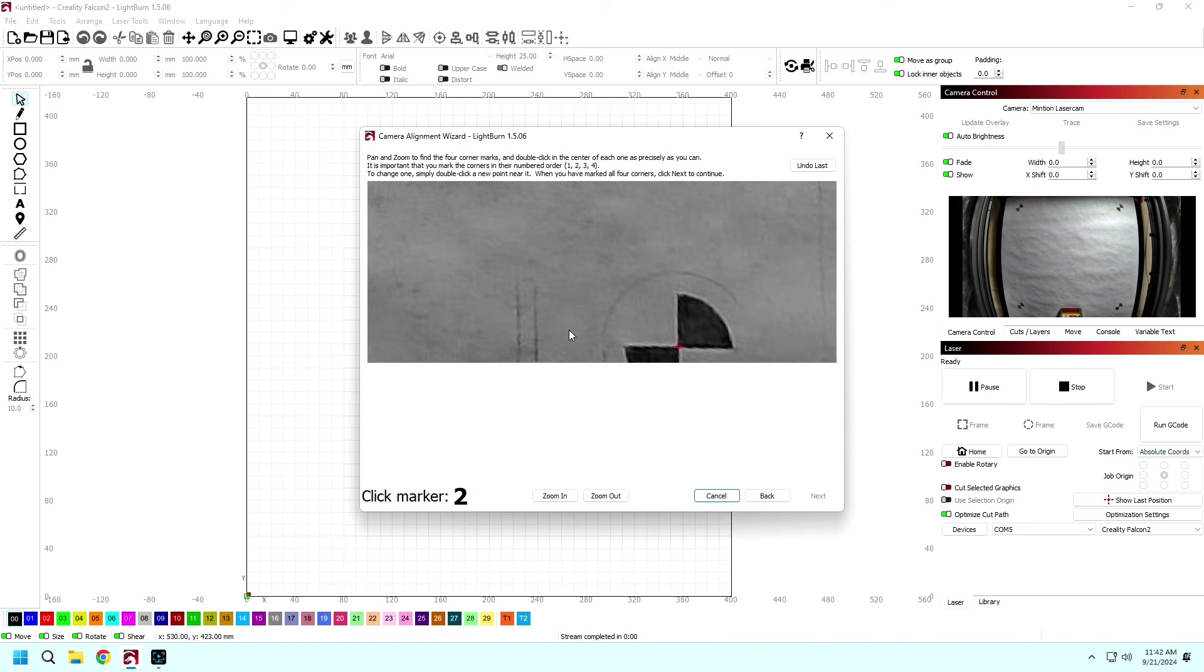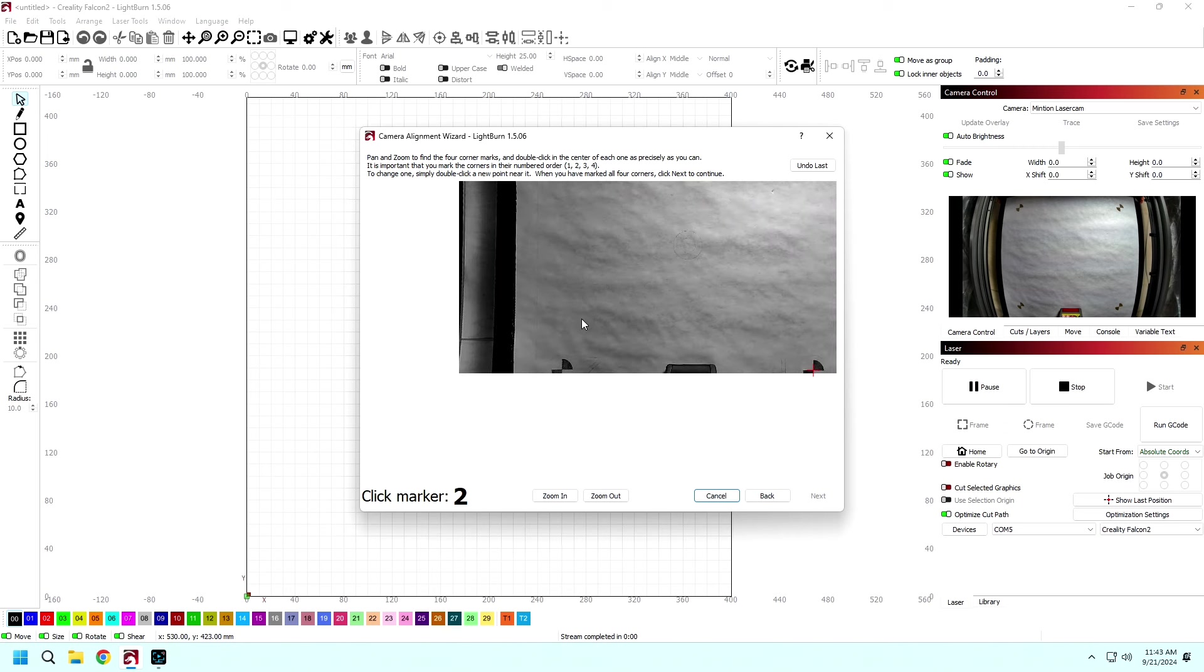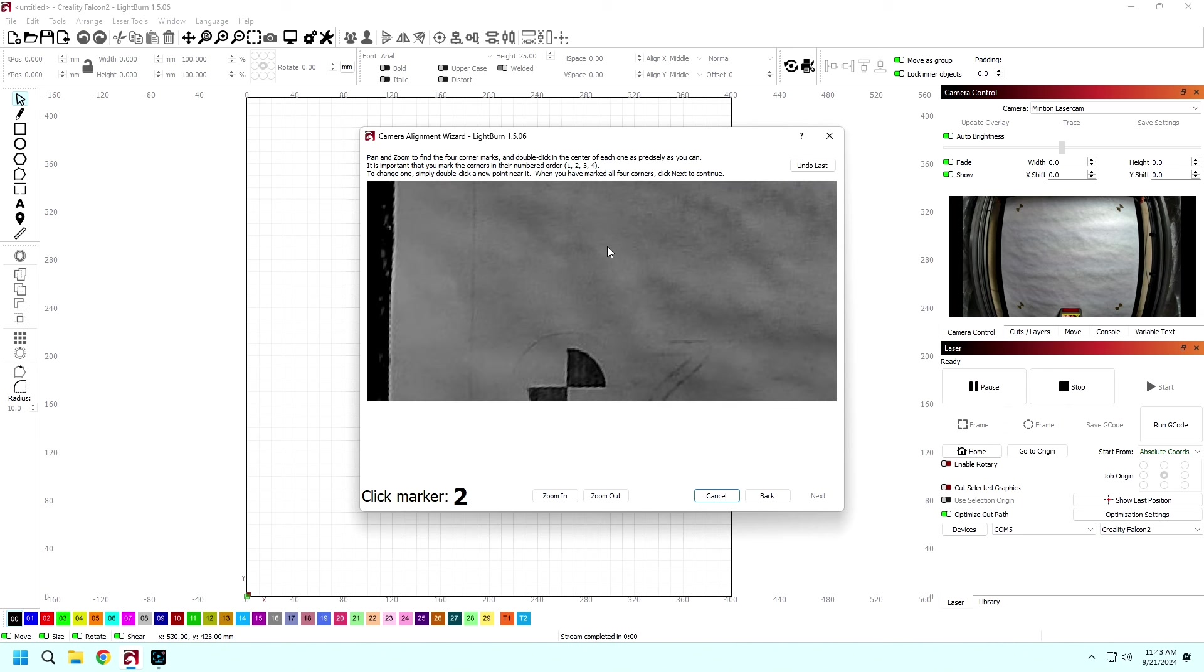Then click Next. Pan and zoom until you can see the exact center of target number one and then double click the center of the target. A red crosshair will appear. Repeat until you've marked a crosshair in all four targets. Then you're done.